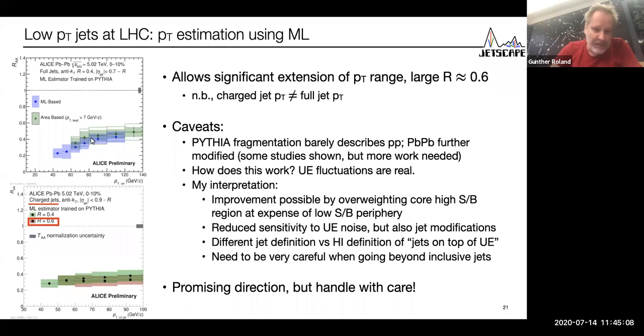You see here that in this Pythia plus underlying event training sample, the machine learning-based algorithm does much better than a conventional area density-based subtraction. Here are some results, and this allows ALICE to push towards lower transverse momenta, from the 60 GeV that I mentioned down to 40 GeV, which is a big step. And to do so not for tiny R=0.2 jets, but for jets that are 0.4, which is a standard choice, or maybe even as big as 0.6, still going down to 60. That is a very exciting development.